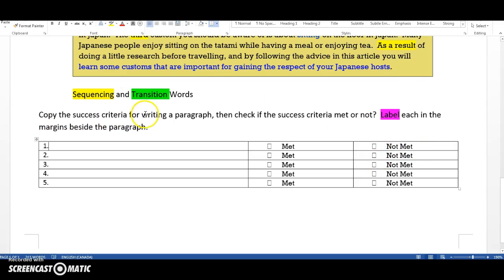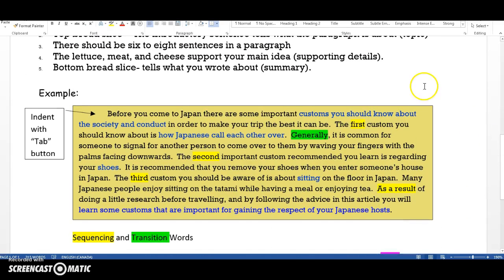So, copy the success criteria for writing a paragraph. Then, check if the success criteria is met or not by checking these boxes. Then, label each in the margins beside the paragraph. So, wherever you see, like I did here, the six to eight sentences, then you would write that somewhere over here. If you see supporting details, then you're going to make a little note of it in the side, similar to what I did here. So, good luck!